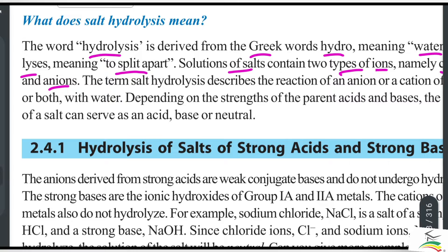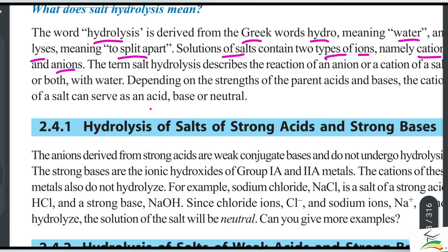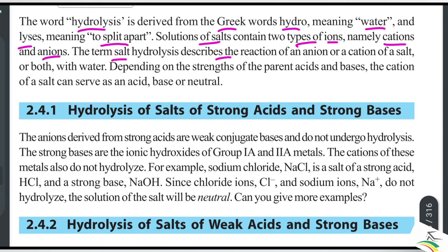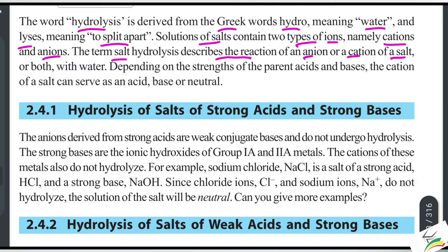The metal ion is a cation and the non-metal ion is an anion. The term salt hydrolysis describes the reaction of the cation or anion of a salt with water.